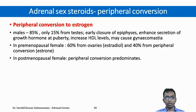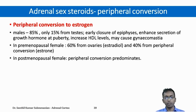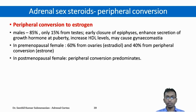Regarding peripheral conversion to estrogen in males: 85% of estrogen in males is due to adrenal peripheral conversion and only 15% is from the testes. This estrogen in males is essential for early closure of epiphyses, enhances secretion of growth hormone at puberty, increases protective HDL levels, and in few cases may cause gynecomastia. In premenopausal females, 60% of estrogen is from ovaries (estradiol type) and 40% from peripheral conversion (estrone type). In postmenopausal females, estrogen contributed by adrenals substantially increases.